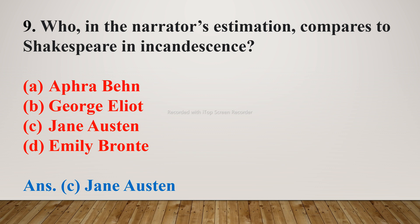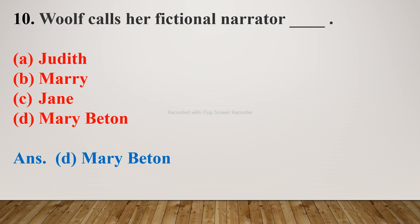Question number 9: Who, in the narrator's estimation, compares to Shakespeare in condensed scenes? Options are A. Ackerman, B. George Eliot, C. Jane Austen, D. Emily Brontë. The right answer is C. Jane Austen. Question number 10: Woolf calls her fictional narrator — options are A. Judith, B. Mary, C. Jane, D. Mary Batten. The right answer is D. Mary Batten.